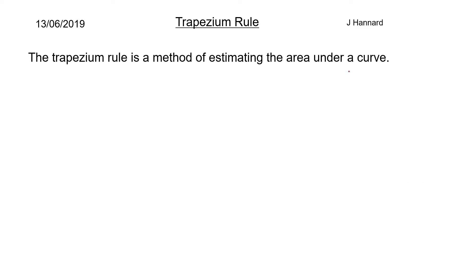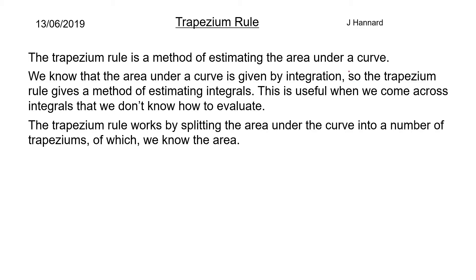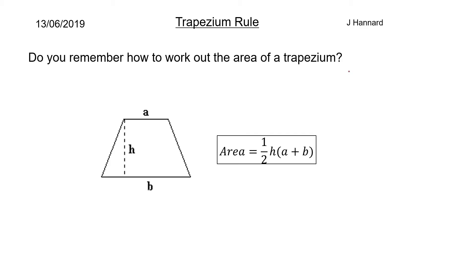The trapezium rule is a method of estimating the area under a curve. We know that the area under a curve is given by integration, which we covered under definite integrals. The trapezium rule gives a method of estimating these integrals — it's useful when we come across integrals we don't know how to evaluate. It works by splitting the area into a number of trapezia. The area of a trapezium is: a half times the sum of the parallel sides times how far apart they are — so A = ½ × H × (A + B).